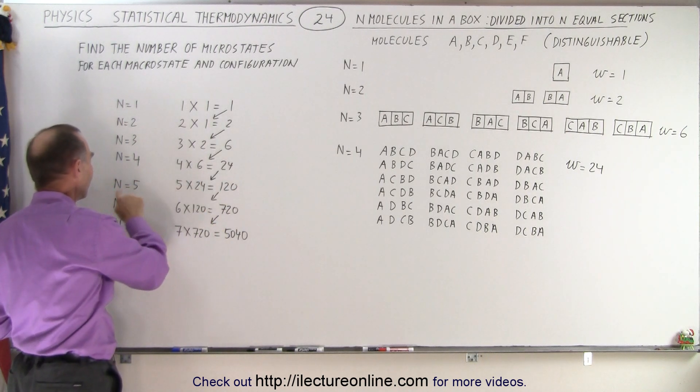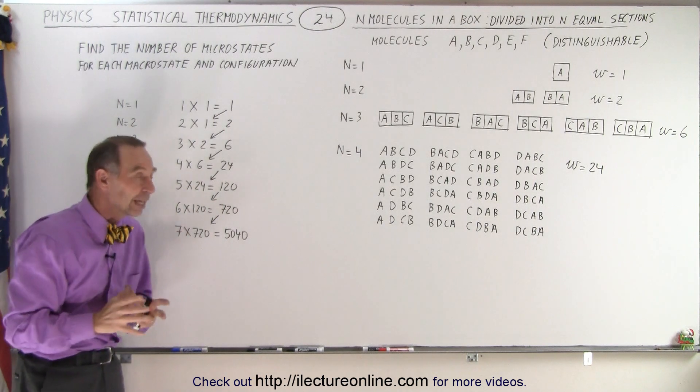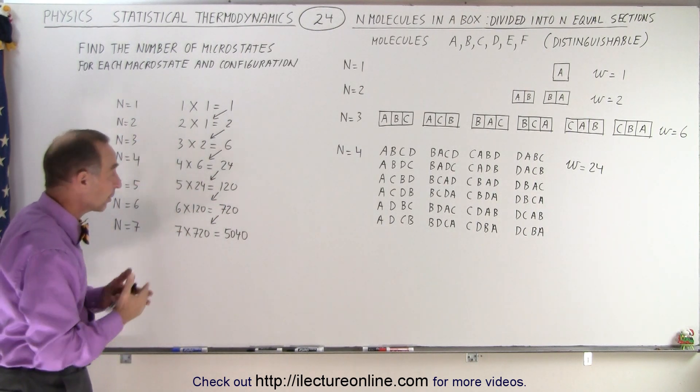So now we bring the 24 down. n equals 5. 5 times 24, or 120 microstates when there's five molecules and five partitions.